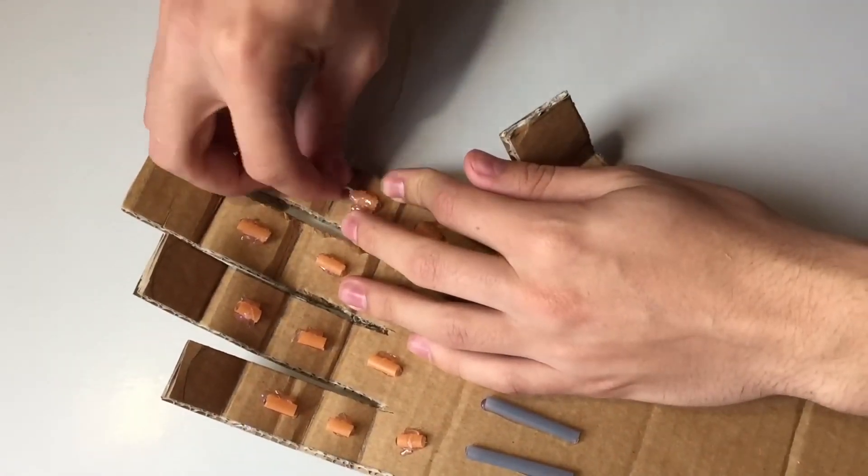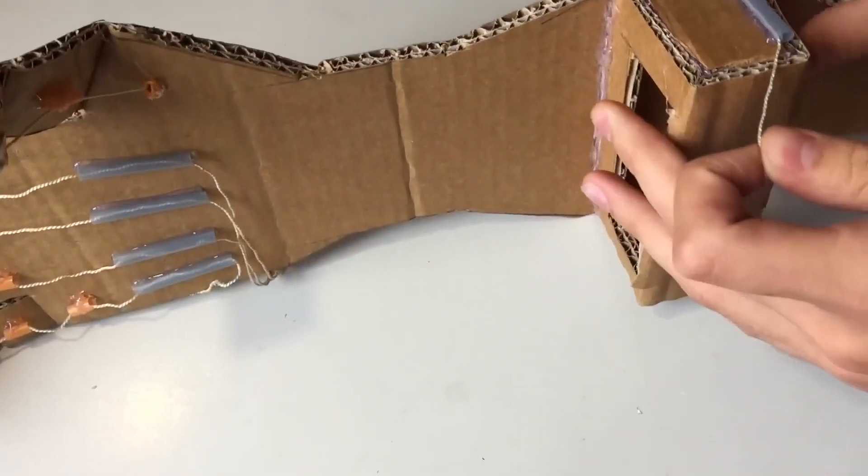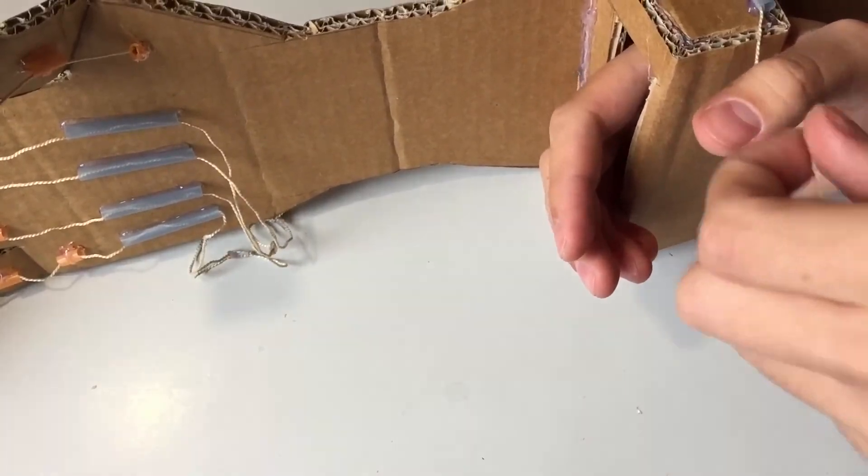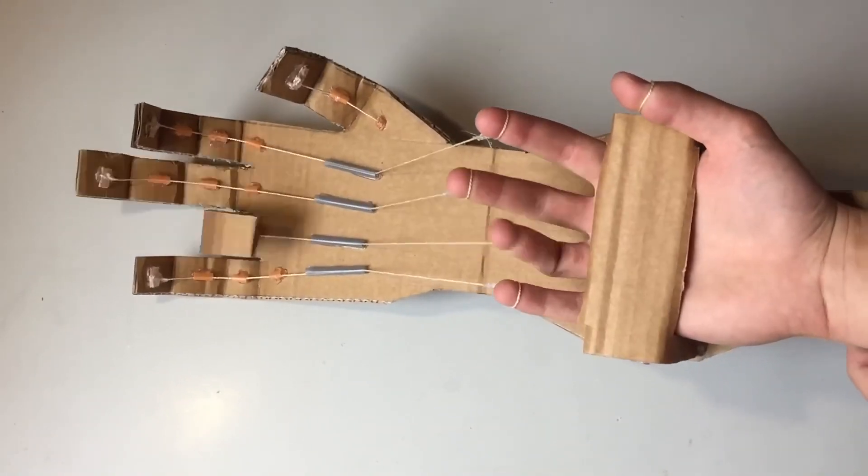You will also need scissors, a hole punch and a marker for this project. To use your Robotic Hand, hold the cardboard palm in one hand and pull the strings with the other hand. Watch how your Robotic Hand bends and flexes its fingers.